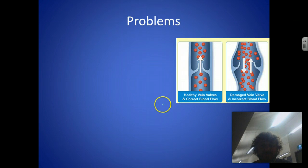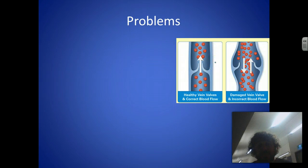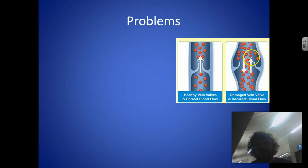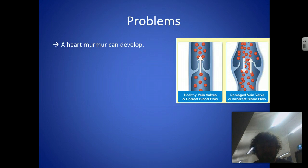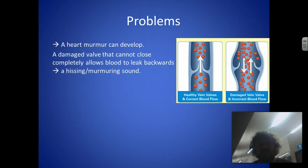Alright, so problems. Well basically, just a bit of quick revision: remember a valve allows blood to flow in one direction. A damaged or incorrect valve may result in blood going in two directions. A heart murmur can develop — that's a sound that a cardiologist, or regular doctors I suppose, can hear using a stethoscope when they listen to the heartbeat. What that comes from is a valve that can't close, which allows blood to leak backwards, and this gives a hissing or murmuring sound.